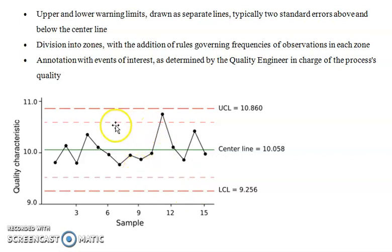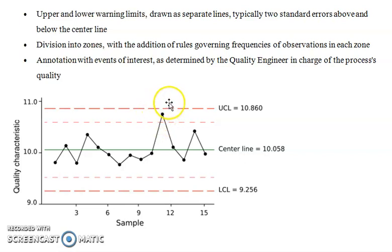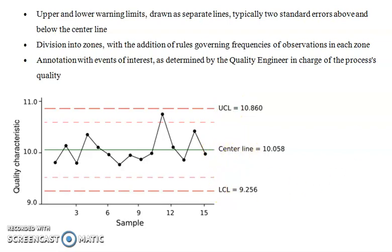There are also optional lines called warning lines. Whenever any observation goes outside a warning line, it means there is a risk — we really need to take action, otherwise quality will go out of control. These warning lines are optional and not available in all charts. The three lines you always see are the upper control limit, the control limit, and the lower control limit.